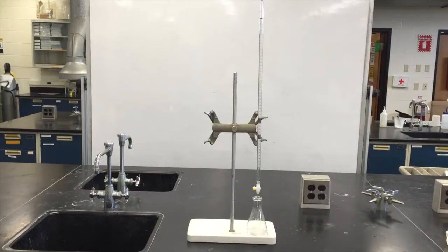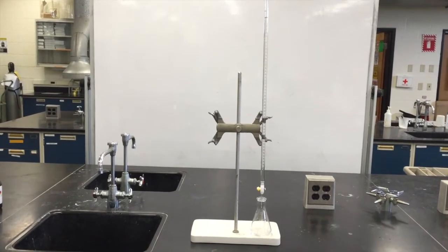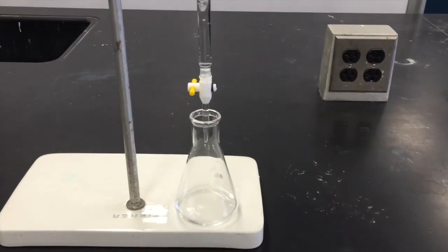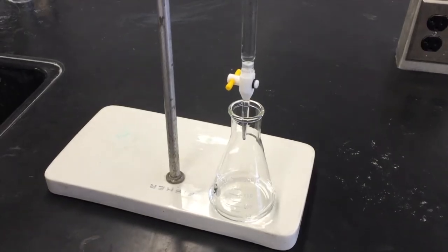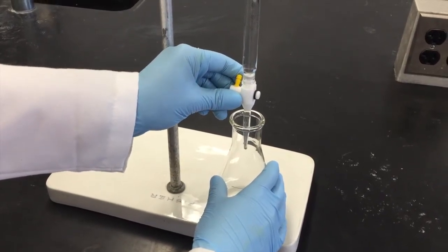Replace the waste beaker with the Erlenmeyer flask and be sure that the tip of the burette is about halfway inside the flask to prevent spillage. Add the sodium hydroxide solution to the hydrochloric acid solution in a dropwise manner.